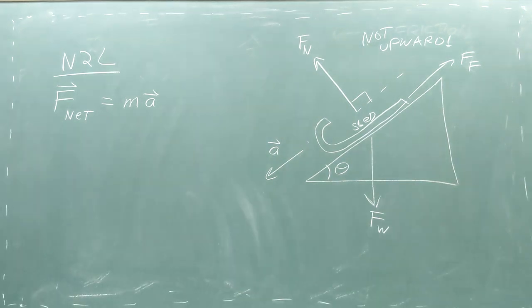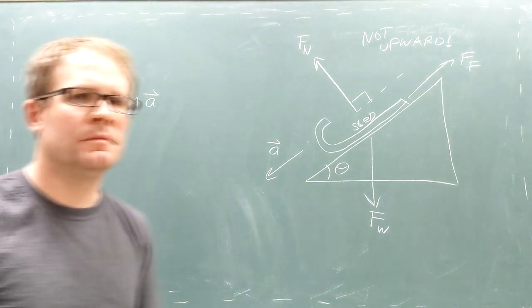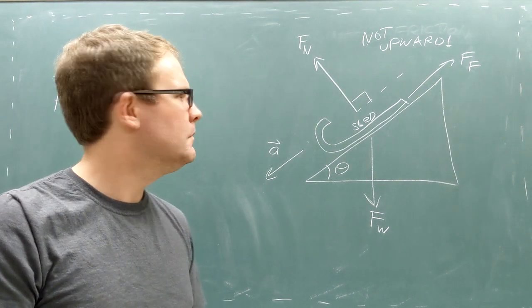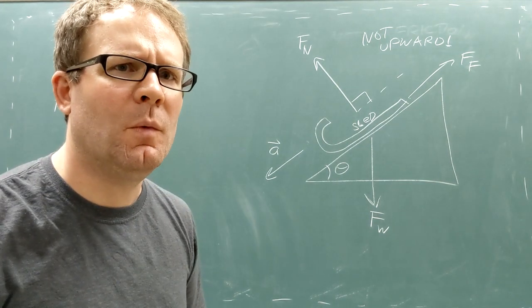This diagram has a lot of vectors pointing in different directions. In fact, only one of these vectors points in the traditional horizontal or vertical direction. We can save ourselves a lot of headache by using tilted axes. Say what?